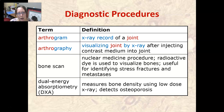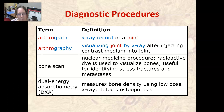A bone scan is a nuclear medicine procedure. It uses radioactive dye to visualize bones. It is useful for identifying stress fractures, tumors, and metastases.